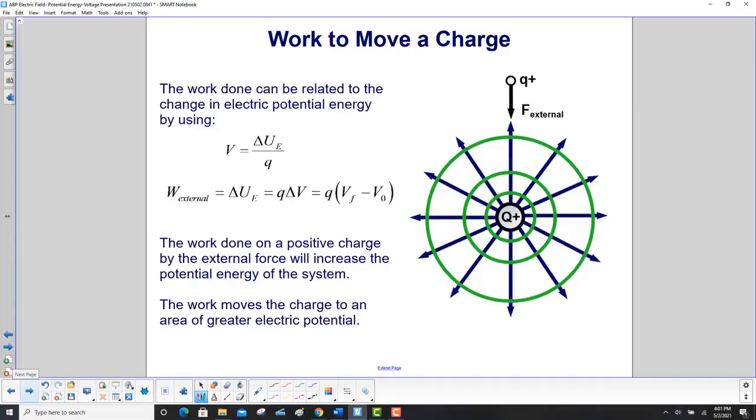The work done can be related to the change in electric potential energy. Voltage or electric potential is the change in the electric potential energy per charge. The work external equals the change in electric potential energy, which equals Q delta V. That's Q times voltage final minus voltage initial.